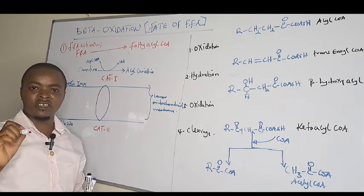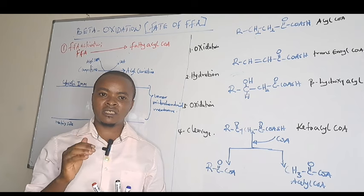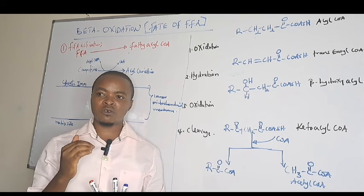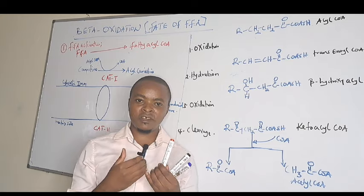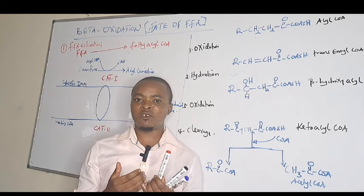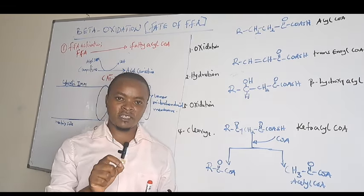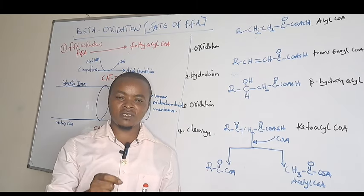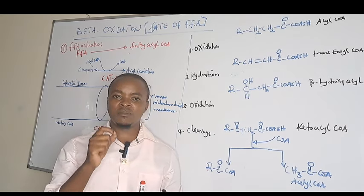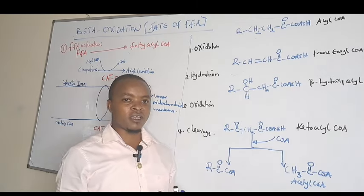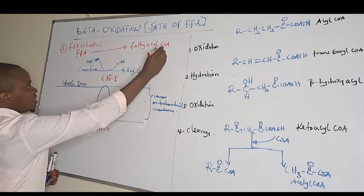This first stage of free fatty acid activation occurs in the cytosol of the liver. As mentioned earlier, when free fatty acids are formed, they are transported bound to albumin and taken to the liver cells. When they reach the liver cells, free fatty acids undergo activation in the presence of ATP and are converted to fatty acyl-CoA.